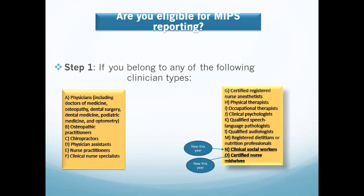To determine whether you are eligible for MIPS, there are various steps to follow. The first step is to see whether you belong to any of the following clinician types: physicians including doctors of medicine, osteopathy, dental surgery, dental medicine, podiatric medicine, or optometry; osteopathic practitioners, chiropractors, physician assistants, nurse practitioners, clinical nurse specialists, certified registered nurse anesthetists, physical therapists, occupational therapists, clinical psychologists, qualified speech language pathologists, qualified audiologists, registered dietitians, or nutrition professionals.